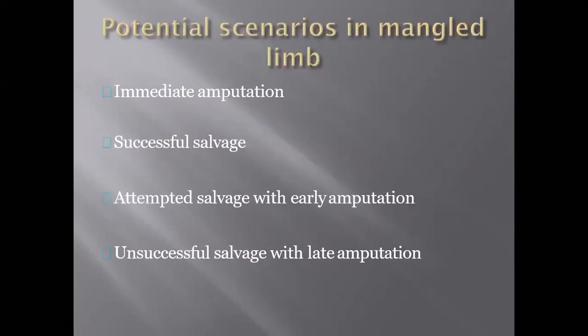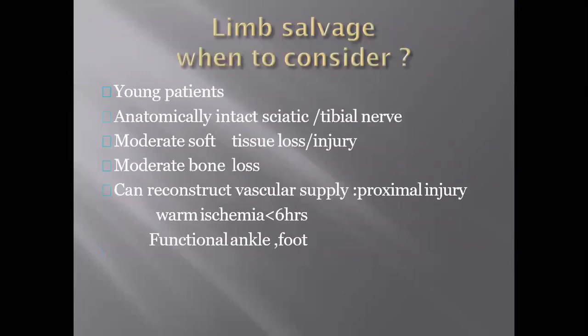The potential scenarios in mangled extremities are: we can immediately amputate the limb, we can successfully salvage the mangled extremity, we can attempt salvage with early amputation, or unsuccessful salvage with late amputation. When considering limb salvage, young patients with anatomically intact sciatic and tibial nerve, moderate soft tissue loss and bone loss, and presentation within 6 hours after vascular compromise are candidates for salvage.